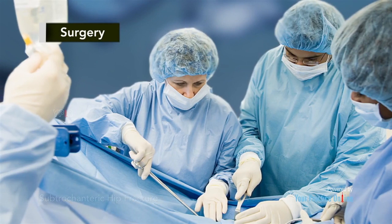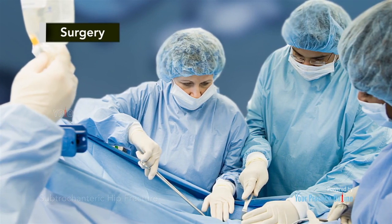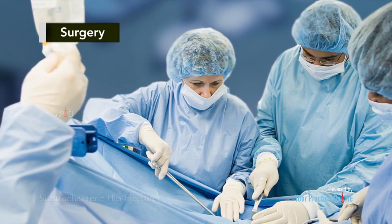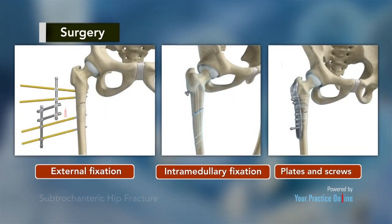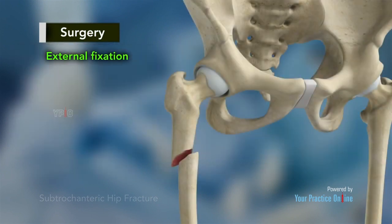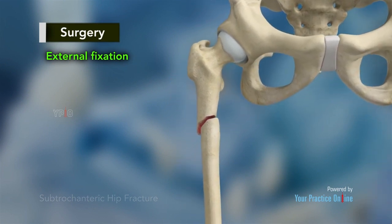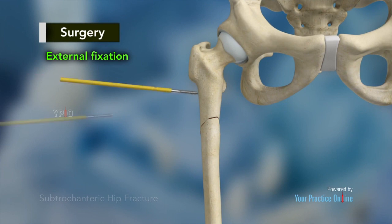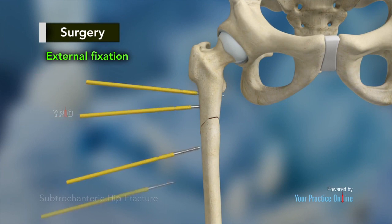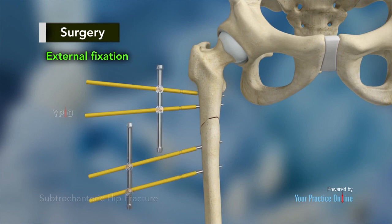Surgery is usually the main treatment for subtrochanteric fractures. Surgical options include external fixation, intramedullary fixation, or using plates and screws. External fixation is a temporary fixation used for severe open fractures. Pins are inserted into each of the fractured fragments and supported with tubes close to the bone. The tubes are interconnected with short tubes to provide more stiffness for the frame.